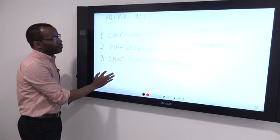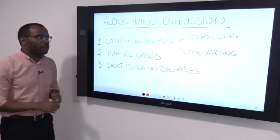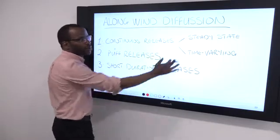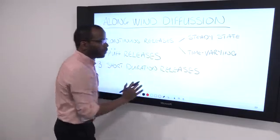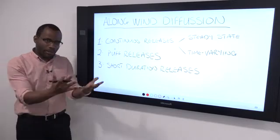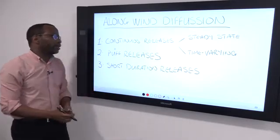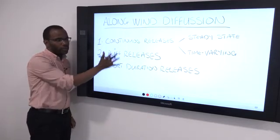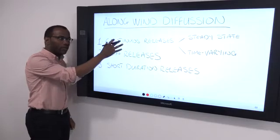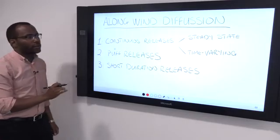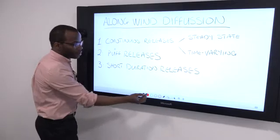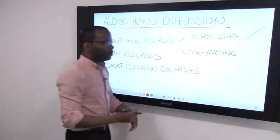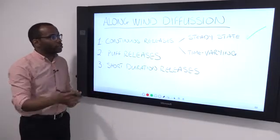We have broadly three release types. First one: continuous releases. These can be broken down into two types: steady state or time-varying. You have puff releases, which is just a puff, like an instantaneous release. And then you have short duration releases, which are kind of in between. They're not quite continuous, but they're not quite puff releases. Now AWD is not important for steady state releases, and that's because the diffusion in the x direction is not significant.